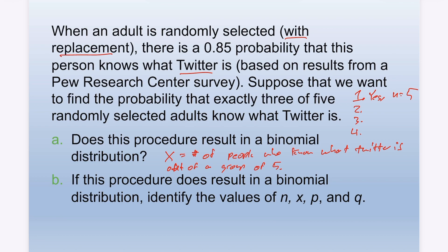Condition two: is it independent? Yes, because it is with replacement. Each time you pull somebody for your group it's completely independent. Condition three: is it a Bernoulli trial? Yes — either they know what Twitter is or they don't.